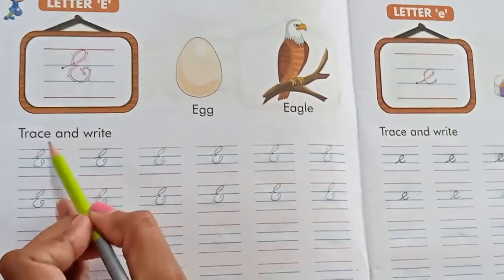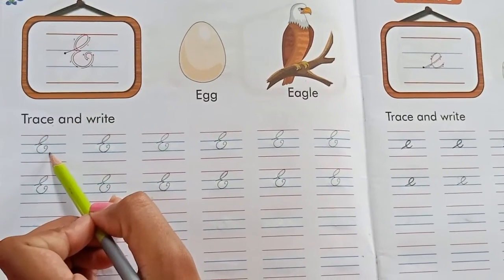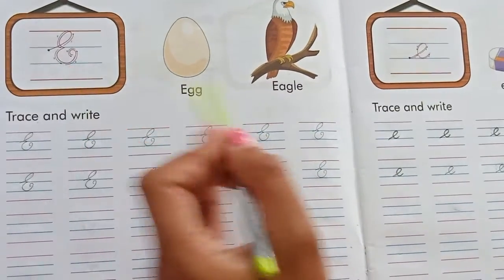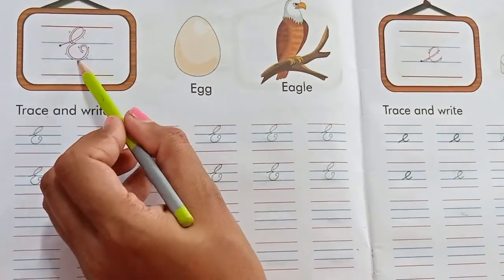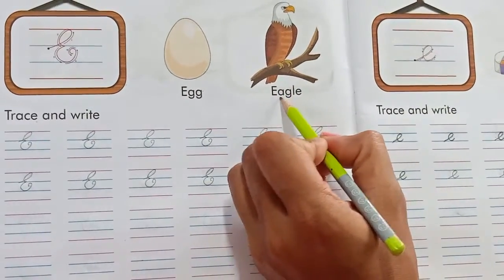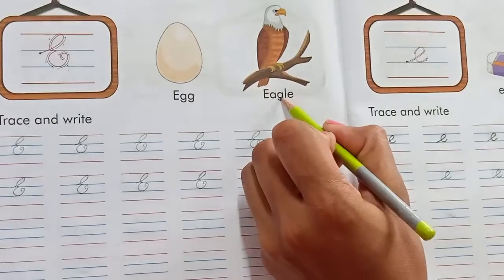So first we will trace letter E. Students first look over here. E for egg. E for egg. E for eagle. E for eagle.